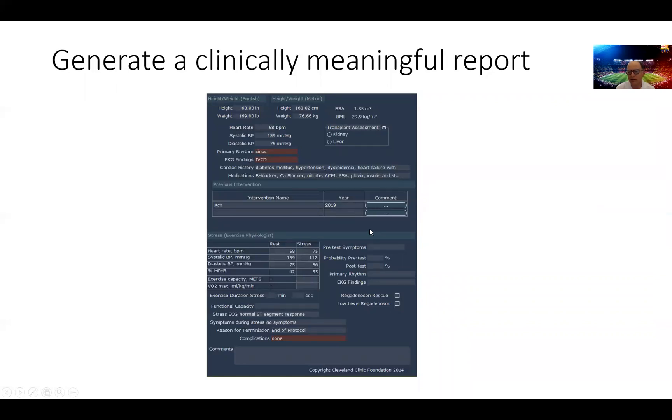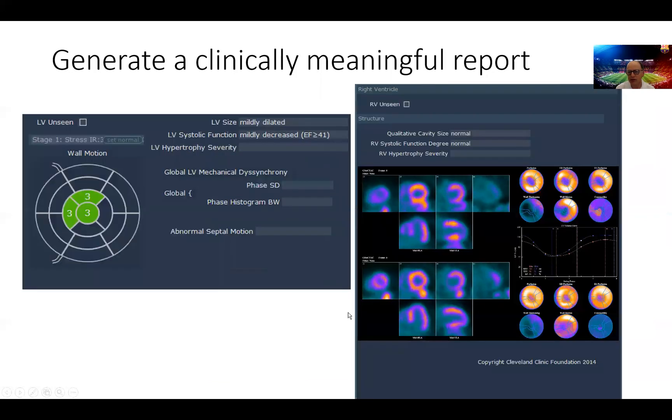But so we can see again the heart rate goes up with regadenoson. Blood pressure goes down. That's an insurance policy that the patient reacted properly to the regadenoson, to the stress agent and the patient did not have any symptoms during stress.